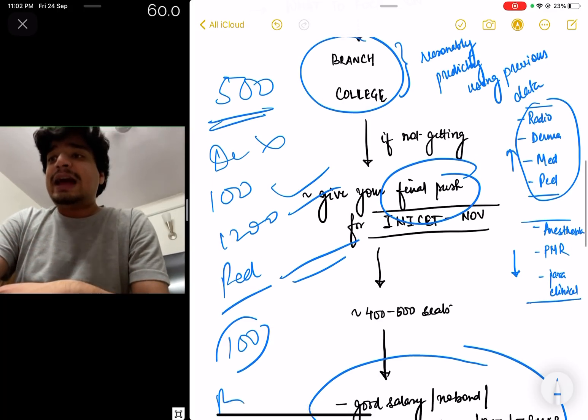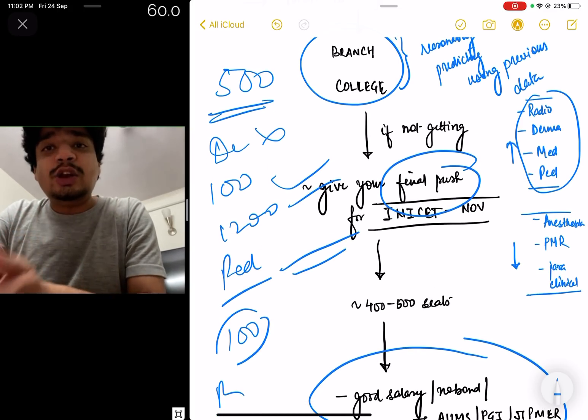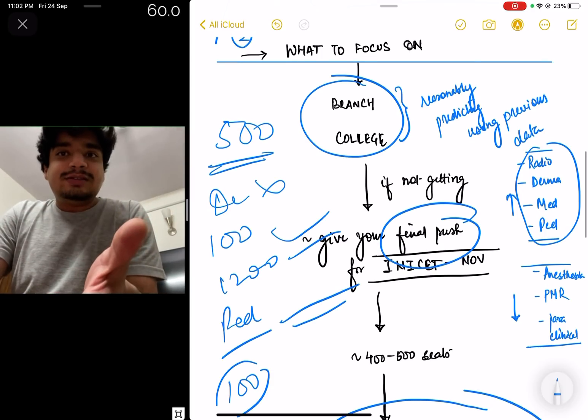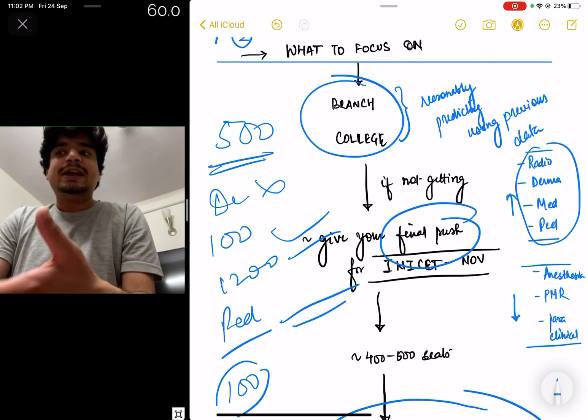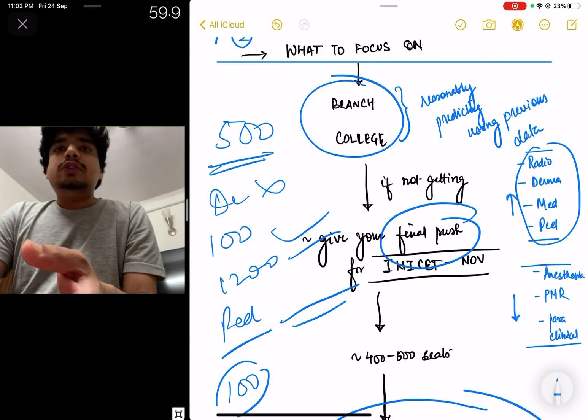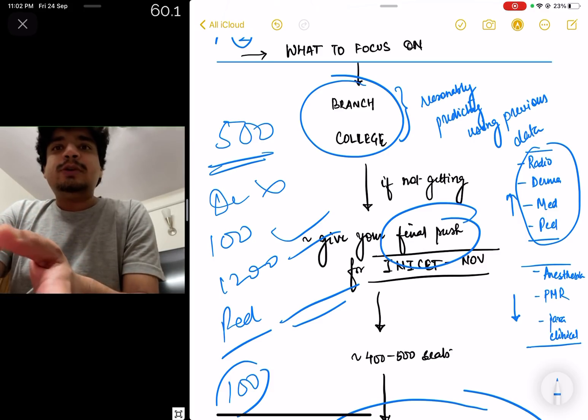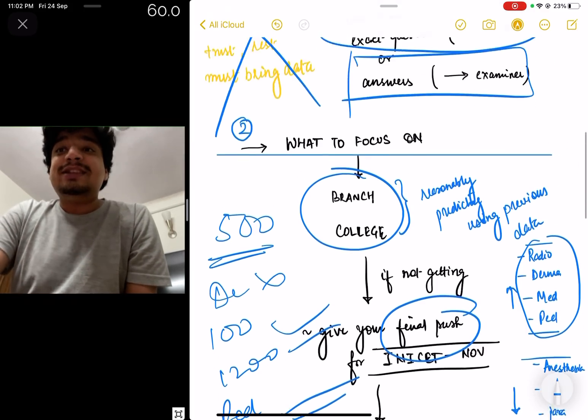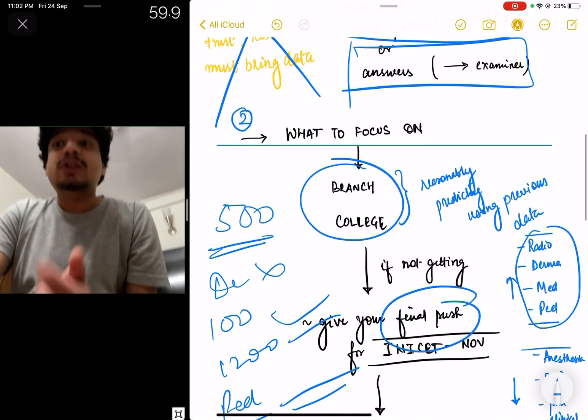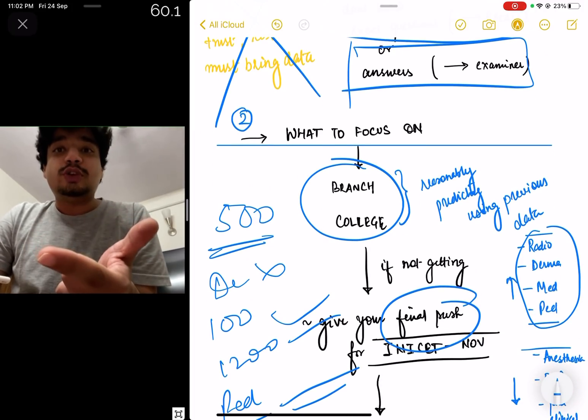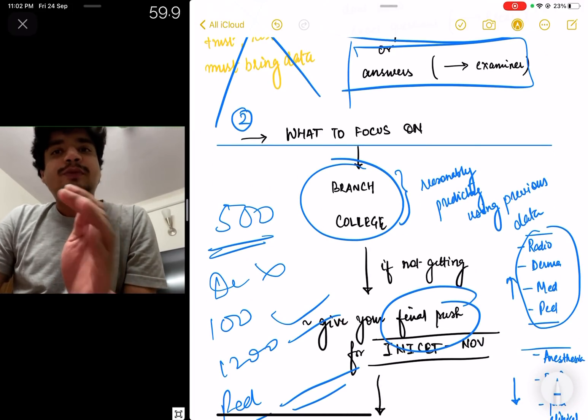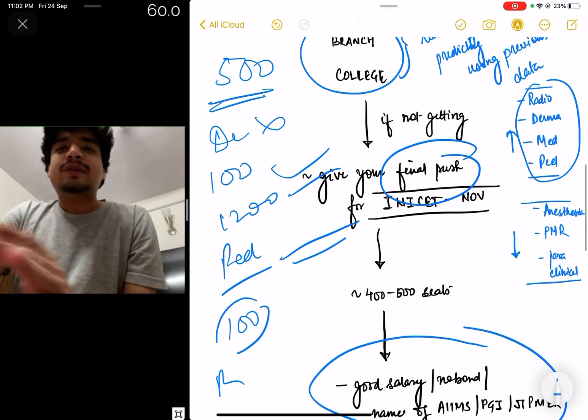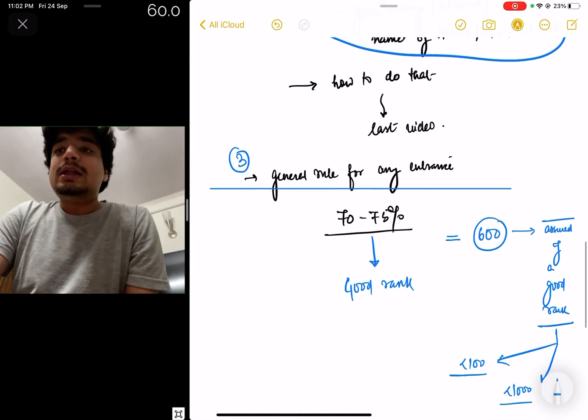In general we know Radio, Derma, Medicine, Peds, these are subjects taken initially by the toppers who get good rank, 1000-2000 rank. Anesthesia, PMR, paraclinical subjects are taken at lower rank. So if you're interested in a subject like Anesthesia, you should rather focus on college because even if your rank is slightly low, you can probably get a better college. So instead of focusing on the rank, you should actually focus on what branch you want, what college you want. And if you're not getting it or you have a feeling your exam did not go well, maybe you should give a final push for INICET.